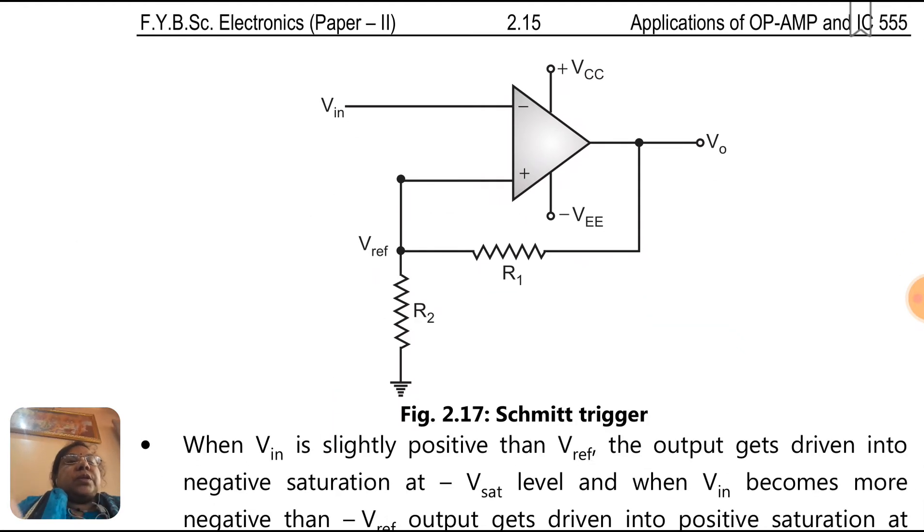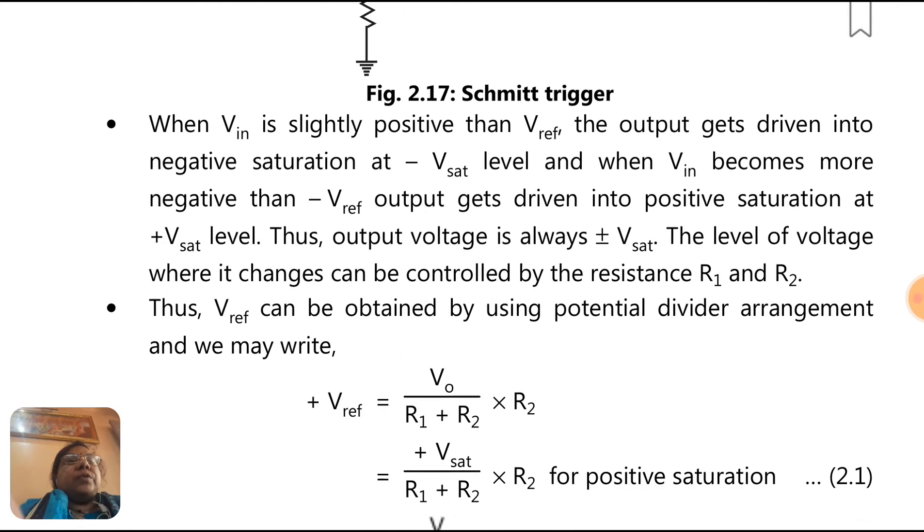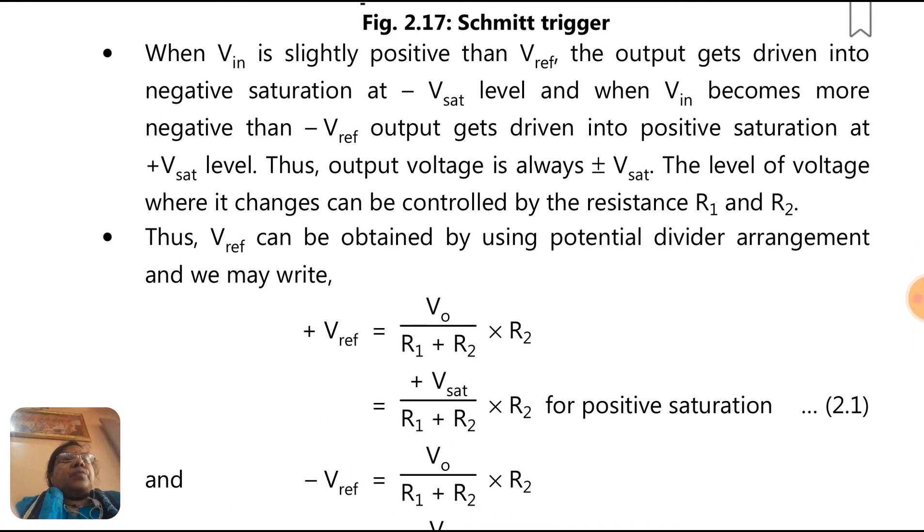This is the Schmidt trigger circuit. Negative terminal input is given and feedback is to V_ref reference voltage. When V_in is slightly positive than V_ref, the output gets driven into negative saturation at minus V_sat level. And when V_in becomes more negative than minus V_ref, output gets driven into positive saturation at plus V_sat level.